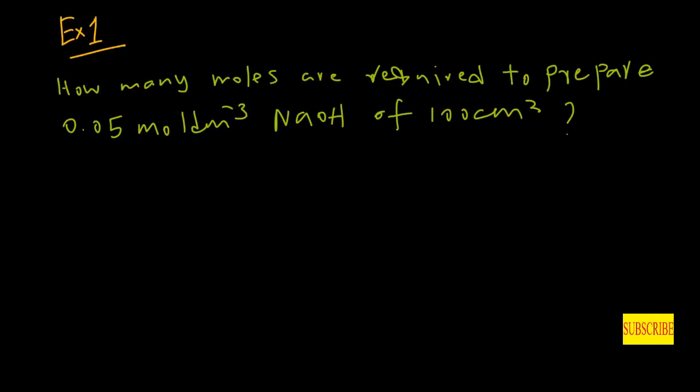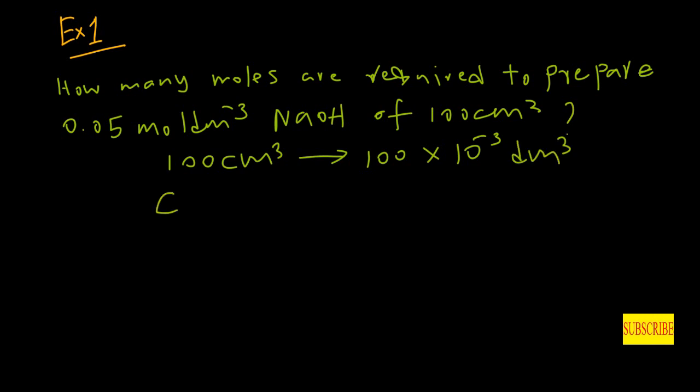Now consider this example. We need to find out the number of moles required to prepare a 0.05 M NaOH solution with 100 cubic centimeters. We first need to convert 100 cubic centimeters to cubic decimeters by multiplying by 10⁻³.